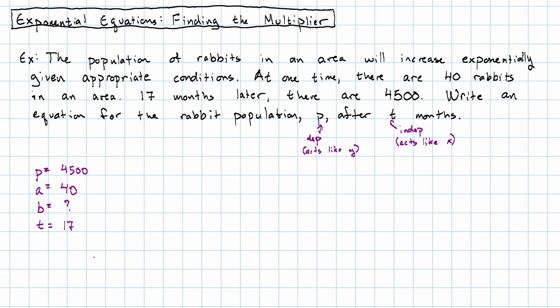We don't know the multiplier, but we can figure it out. The form of our equation will be P equals A times B to the T. So, 4,500 equals 40 times B to the 17th.